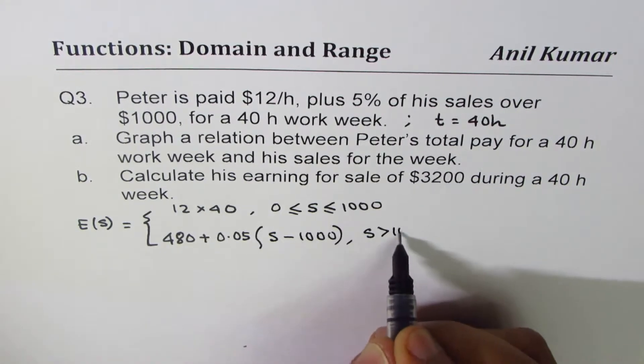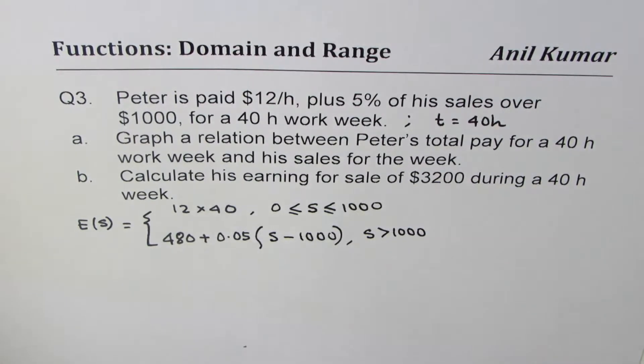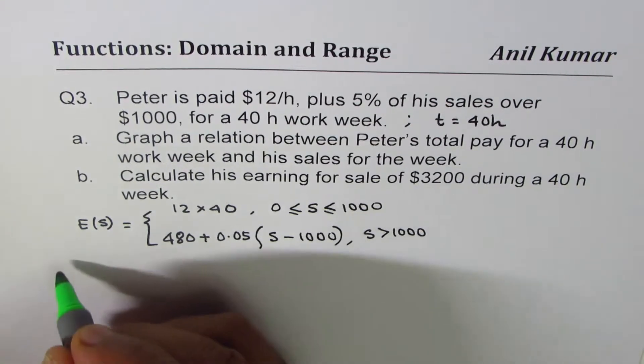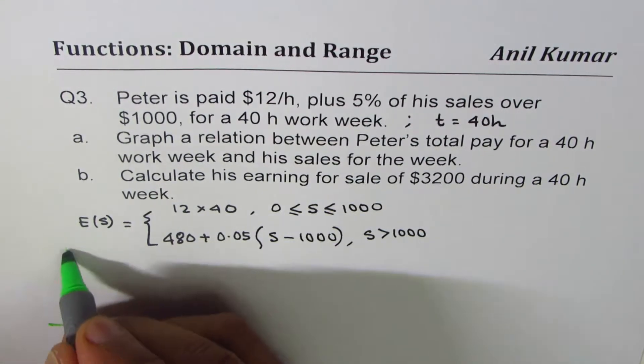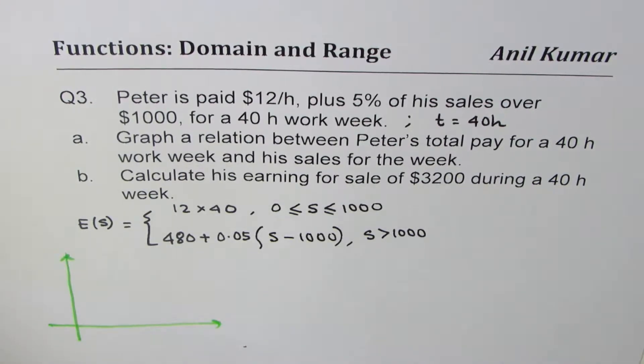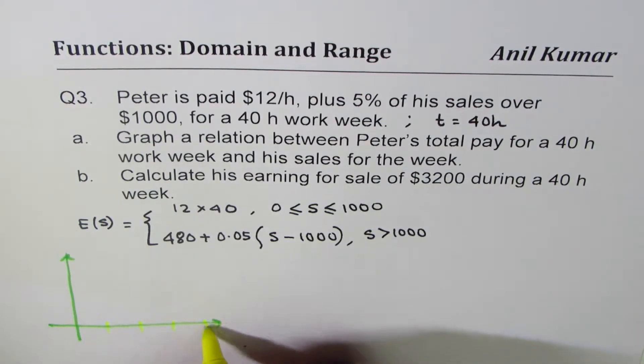So this is when sales is greater than 1000. That becomes the function which defines the earnings of Peter. Now you have to graph this function. Let me graph this function here.